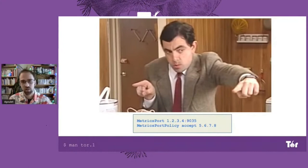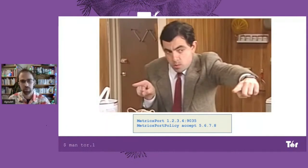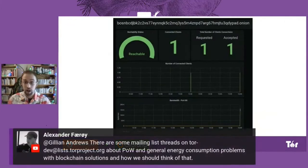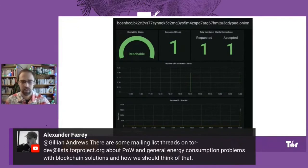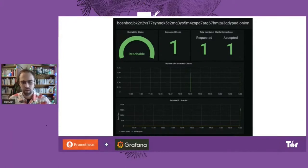A second very exciting thing we added in Tor is called the Metricsport. The Metricsport is a port that you open, and there is privacy concern because it exposes a lot of information from Tor, so it has to be used carefully. But those metrics will allow you to do things like build a very nice dashboard where you can track connected clients, requests, bandwidth, reachability status, and much more. We plan to extend these metrics to relays and export a variety of different metrics — one example is a dashboard in Grafana.